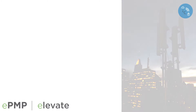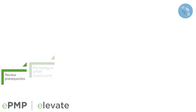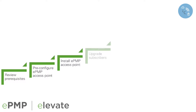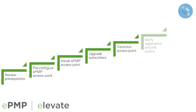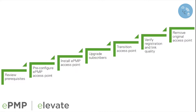The ePMP Elevate Migration consists of seven main steps, including reviewing prerequisites and requirements, pre-configuration of the ePMP access point, installation of the ePMP access point, subscriber upgrade, transition of subscribers to the ePMP access point, verification of subscriber registration and link quality, and removal of original access point equipment.